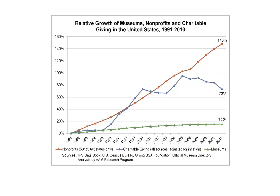But there are some very interesting trends that intersect with this. This blue line is charitable giving adjusted for inflation from 1991 to 2010 — you can see it's going up by 73%, because this is absolute giving, not corrected as a percentage of gross domestic product. However, even though the number of museums hasn't increased very much — about 15% in the past 20 years — the number of nonprofits overall has soared, growing by 148%. So there are way more nonprofit entities competing for money that isn't growing at the same rate. This is our competitive environment.